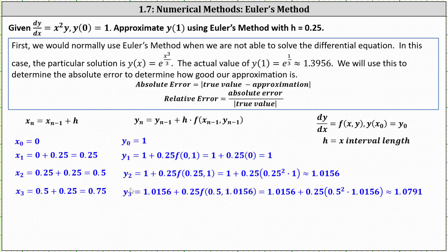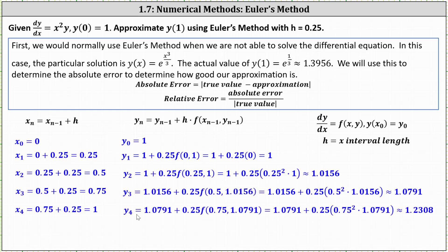Now we determine x sub 4. x sub 4 equals x sub 3 plus 0.25, giving 0.75 plus 0.25, which equals 1. This is the last iteration needed using Euler's method to approximate y of 1. y sub 4 equals y sub 3 plus h times f of x sub 3 comma y sub 3, giving 1.0791 plus 0.25 times f of 0.75 comma 1.0791, which equals 1.0791 plus 0.25 times 0.75 squared times 1.0791, approximately 1.2308. This is our approximation for y of 1 with h equals 0.25.